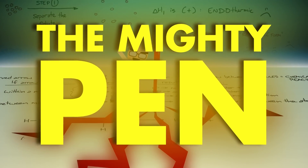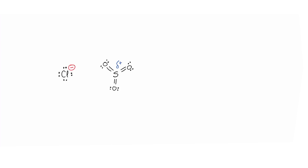That's right: the arrow has to start on a lone pair in the electron-rich nucleophile — the chloride — and it has to finish on a δ⁺ atom in the electrophile — the sulfur. Now let's see if you can draw the arrows and the product. Here's chloride and sulfur trioxide with a δ⁺ sulfur atom. Where should the curved arrows be drawn, and given those arrows, what's the structure of the expected product? Hit pause and draw your response — when you're ready, hit play again and I'll show you the answer.